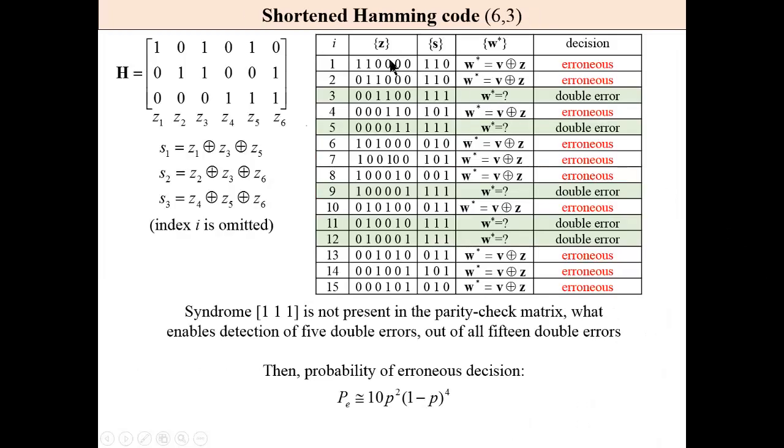Let us consider all double errors for code (6,3), 15 of them. As we can see, for five of them, we have a syndrome, all one syndrome, which is not present in the parity check matrix.